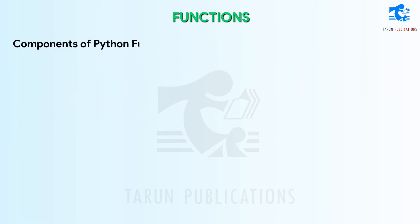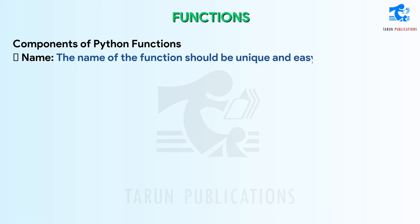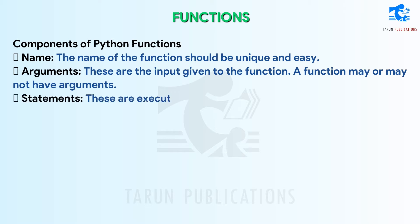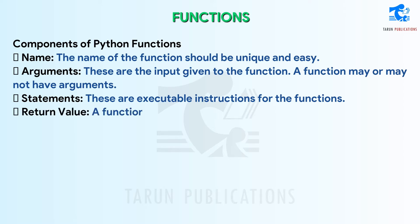Components of Python Functions. Name: the name of the function should be unique and easy. Arguments: these are the input given to the function; a function may or may not have arguments. Statements: these are executable instructions for the functions. Return Value: a function may or may not return a value.